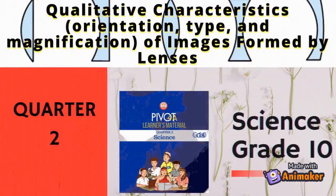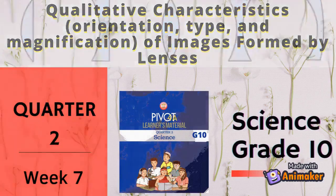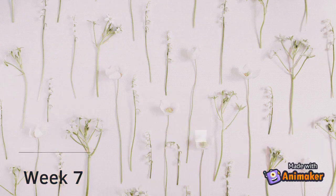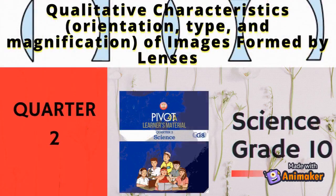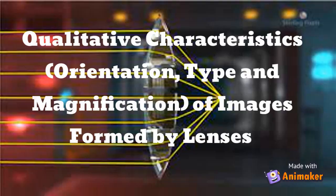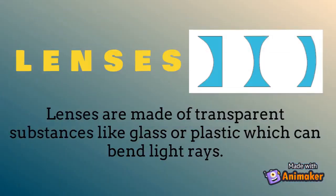In the previous lesson, you explored the qualitative characteristics of images formed by mirrors — both plane and curved mirrors. In this lesson, you will learn the basic information about lenses and how they work. Just like mirrors, you will also explore the qualitative characteristics of images formed by lenses. Lenses are made of transparent substances like glass or plastic, which can bend light rays.